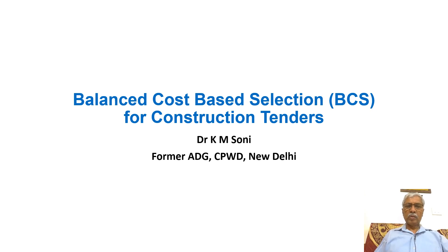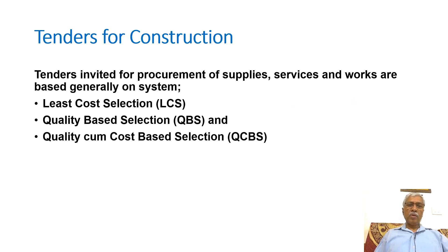We will discuss the balanced cost based selection (BCS) method for construction tenders. Generally, when we call tenders or bids for construction — whether for procurement of supplies, services, or works — these are based on systems called least cost selection (LCS), quality based selection (QBS), or quality cum cost based selection (QCBS).